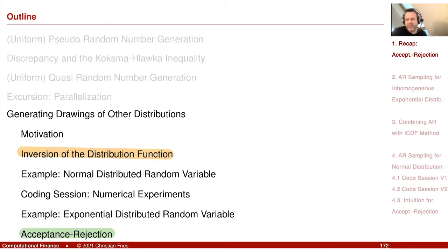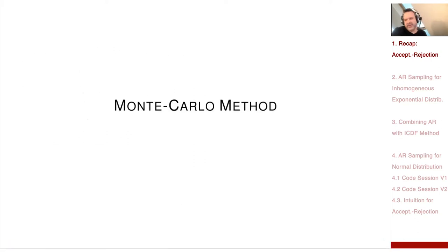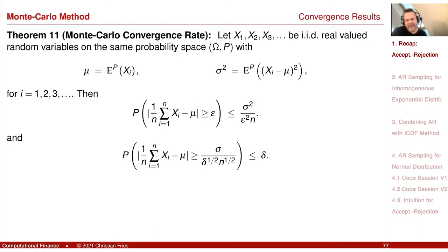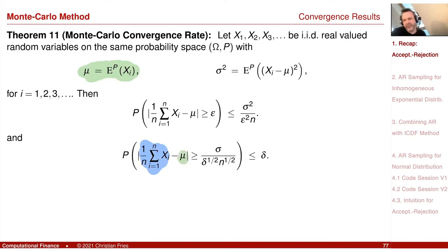We can think of the acceptance-rejection method as a motivation to understand weighted Monte Carlo. The broader context for looking at random number generation is the Monte Carlo method, which was the previous section. In the Monte Carlo method, it was the approximation of the expectation mu using the Monte Carlo average.